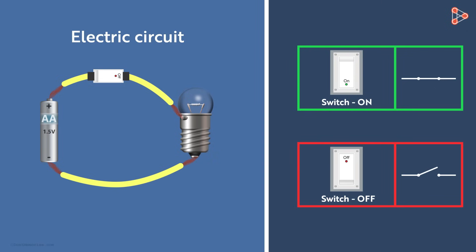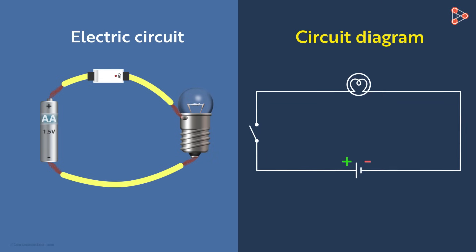If we were to draw a circuit diagram for this circuit, then here is what it will look like. Note that there will be two circuit diagrams for this. This one is when the switch is off and the electric current is not flowing through the circuit. We see that no arrowheads are shown here.